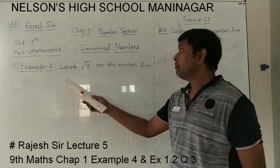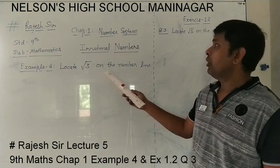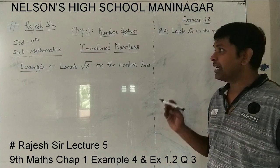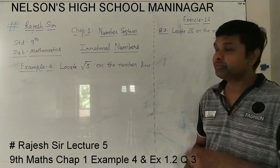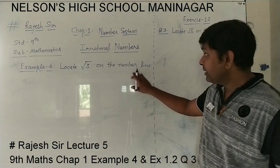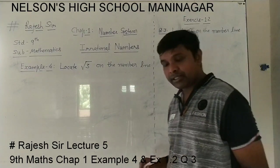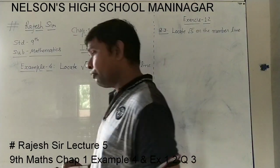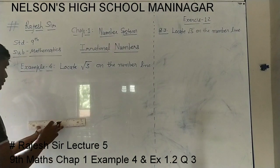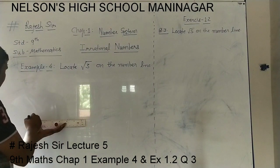And now in example 4, we have to locate root 3 on the number line. Similar to what we have done in the last example, we will first draw the number line and on that we will locate root 3 step by step. Watch carefully.